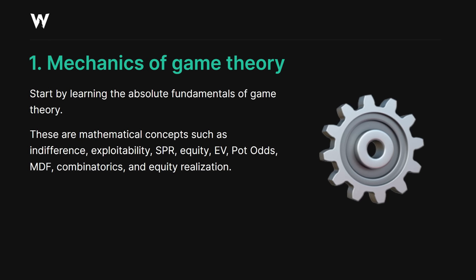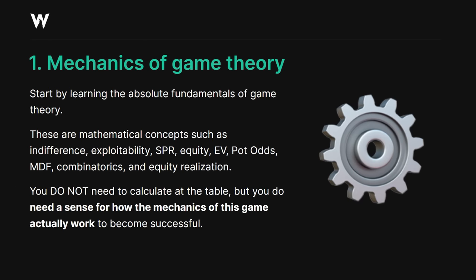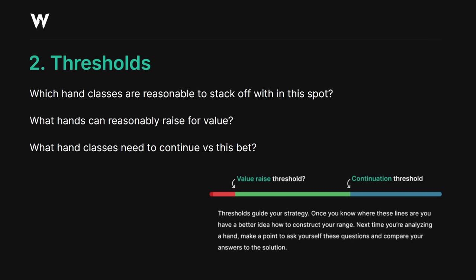You do not need to be calculating all of these concepts at the table, but you do need a sense for how they actually work. For example, if your opponent bets bigger, you don't need to defend as wide. Or if the stack-to-pot ratio is small — meaning not a lot of money behind relative to the pot — you need to be prepared to stack off wider. Indifference just means a hand is close to the line, very close to one decision or the other. It's important to separate points of indifference from a clear snap fold or a clear snap call. It's called learning thresholds. One of the fastest ways to become a reasonably solid poker player is by studying thresholds.